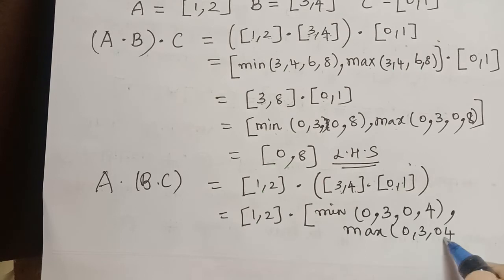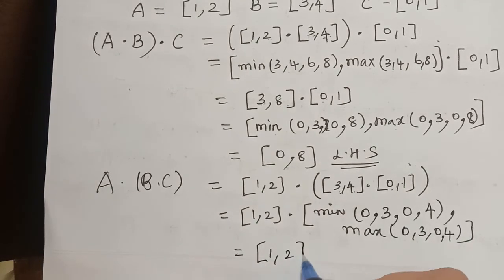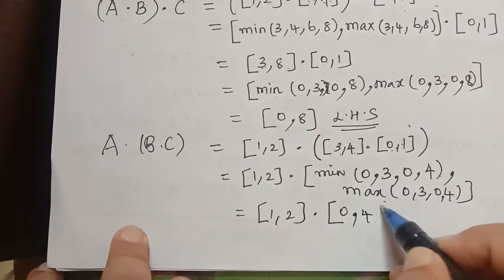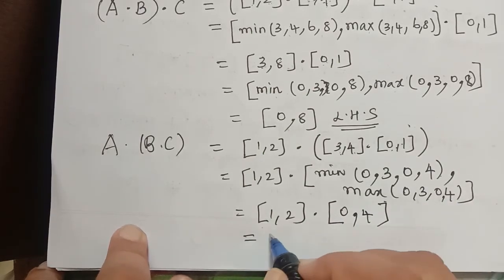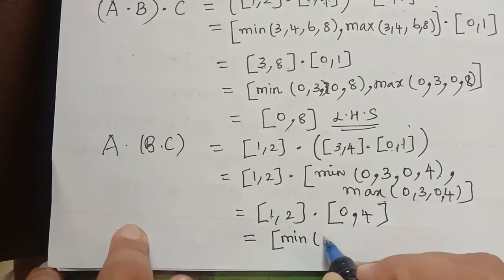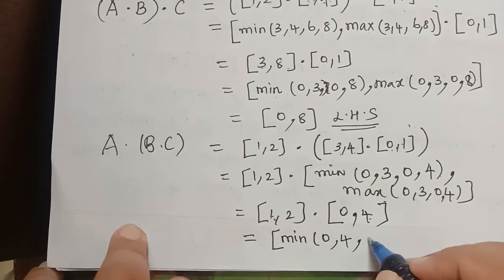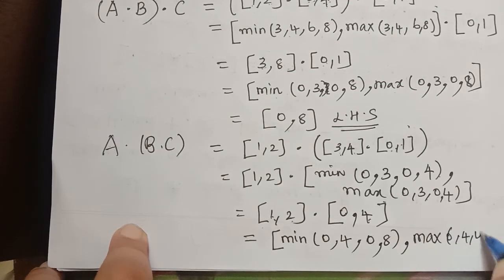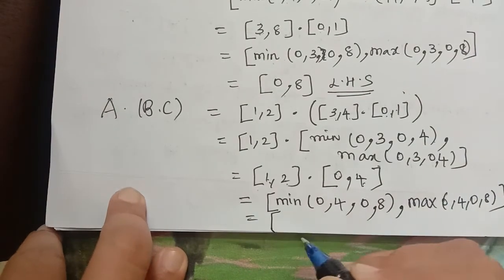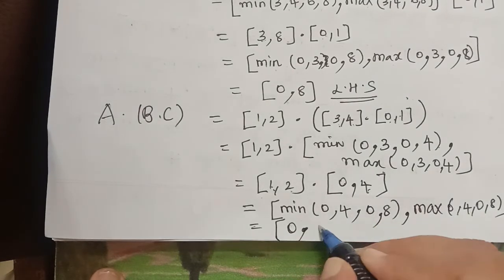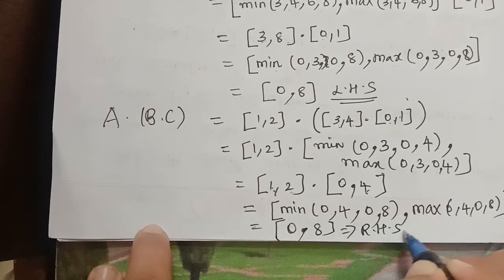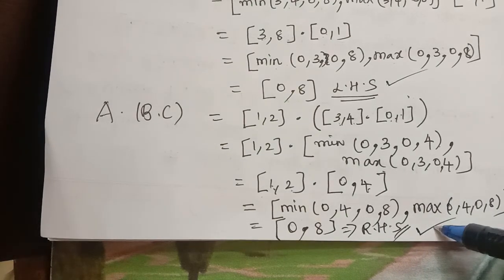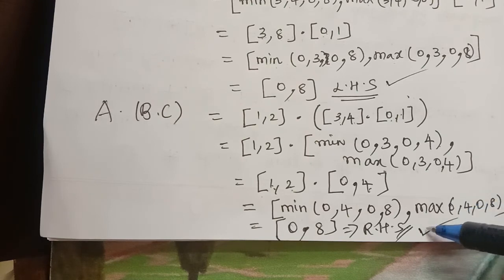So [3, 4] × [0, 1] = closed interval [0, 4]. Now closed interval [1, 2] multiplied with closed interval [0, 4] gives minimum of {1×0, 1×4, 2×0, 2×4} = 0, and maximum of {0, 4, 0, 8} = 8. So the right hand side is closed interval [0, 8]. We observe that the left hand side is [0, 8] and the right hand side is [0, 8], therefore the arithmetic operation of multiplication is associative on intervals.